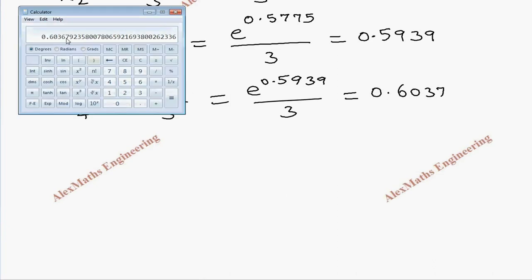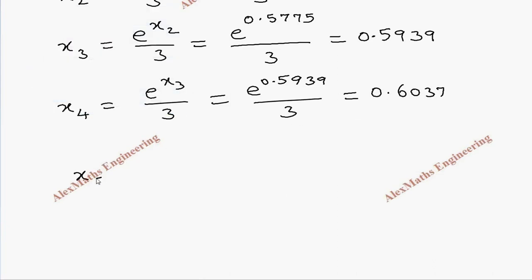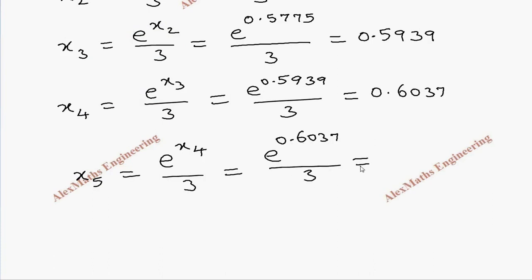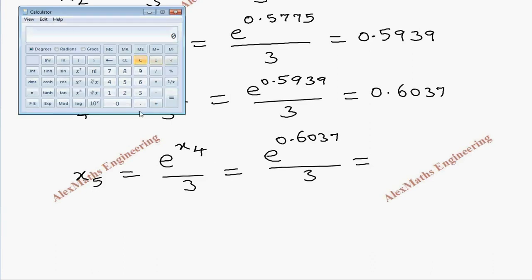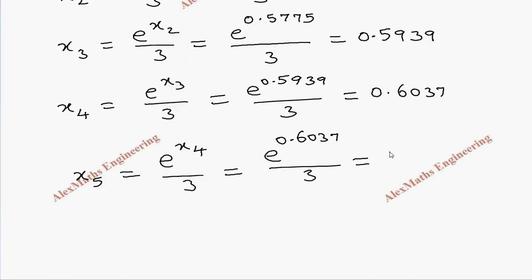Then x₅ = e^(x₄) / 3 = e^0.6037 / 3. Calculating: 0.6037 → e^x → divide by 3 gives x₅ = 0.6096.